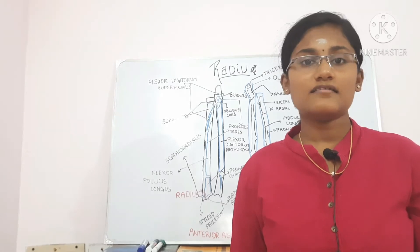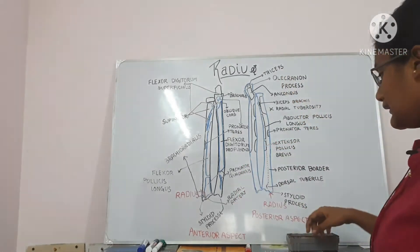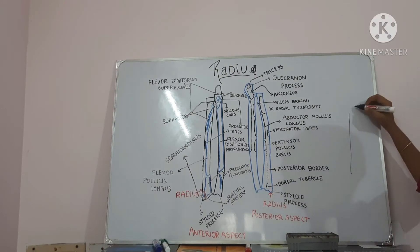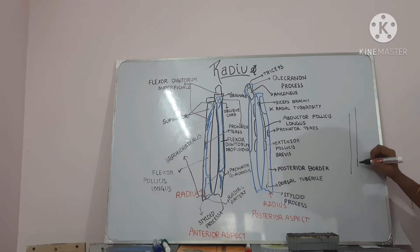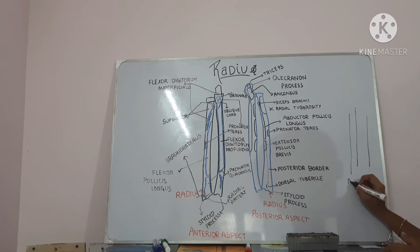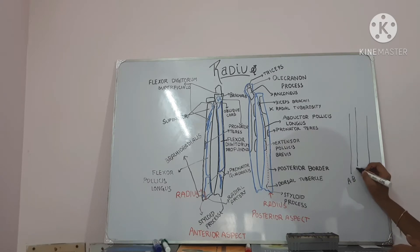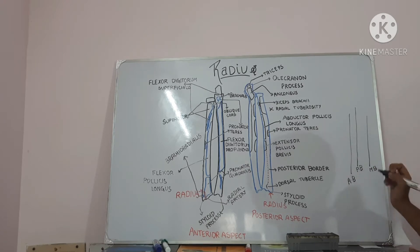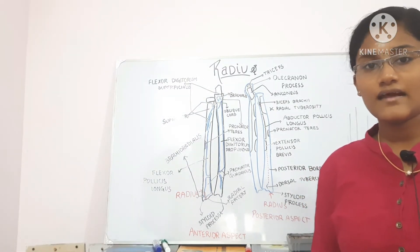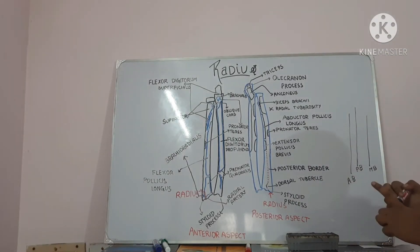The shaft has three borders and three surfaces. It includes the anterior border, the posterior border, and the medial border towards the edge. The medial border gives attachment to the interosseous membrane.